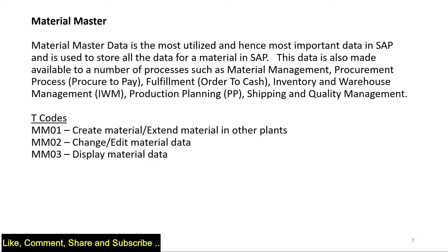Processes include order-to-cash, inventory management, and production planning. The T-codes used to create material master are MM01, MM02, and MM03. MM01 is for creation and extension of material, MM02 is for change and edit.